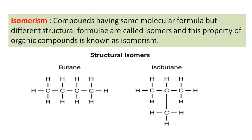Isomerism: compounds having the same molecular formula but different structural formulas are called isomers, and this property is known as isomerism. For example, butane (C₄H₁₀) has all four carbon atoms in a straight chain — called normal butane — while isobutane has one carbon atom in a branched structure. Both have the same molecular formula C₄H₁₀ but different structural formulas, so they are called isomers of each other.